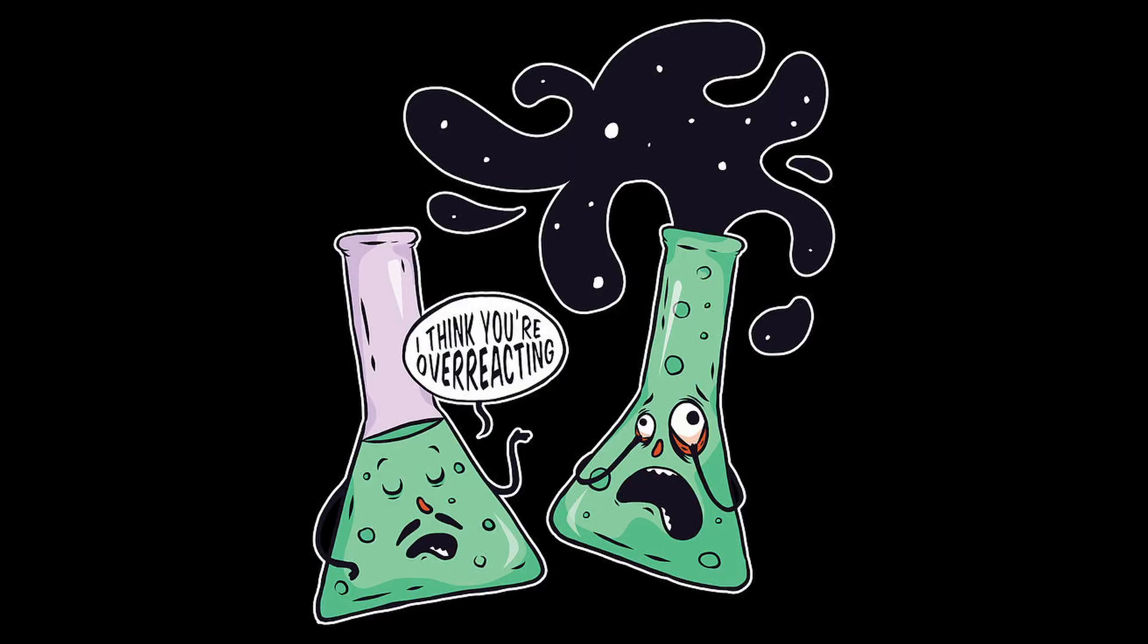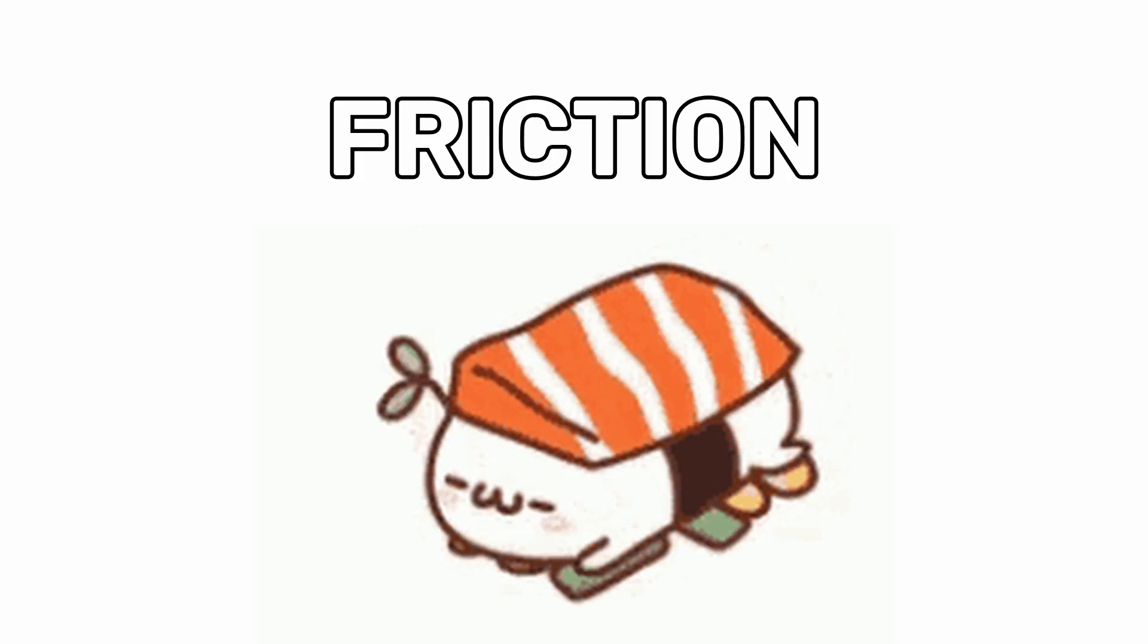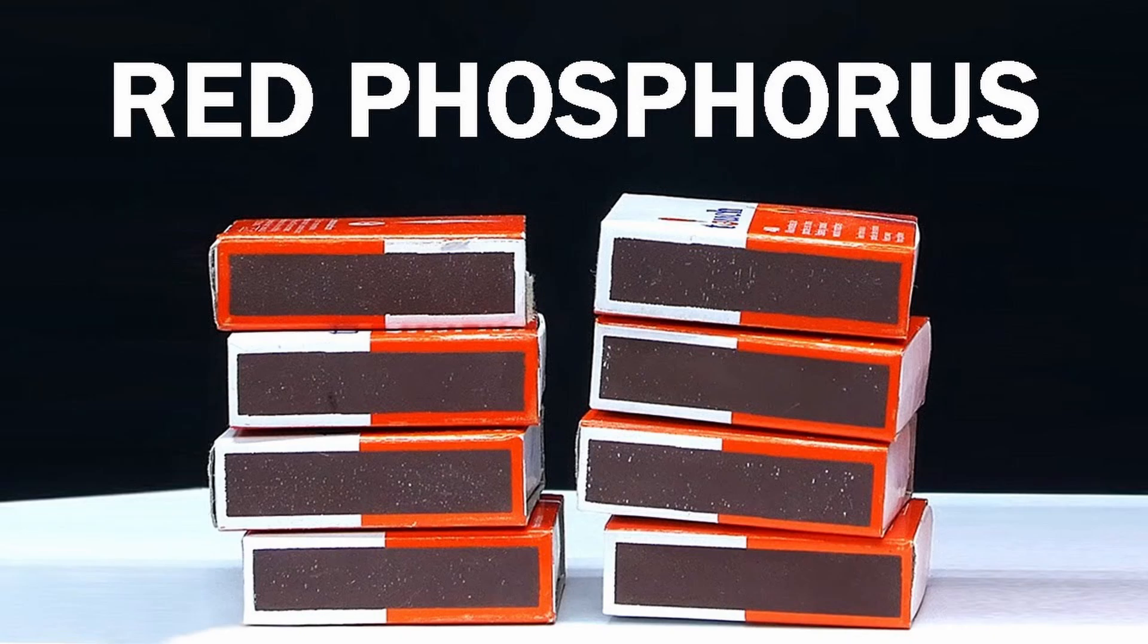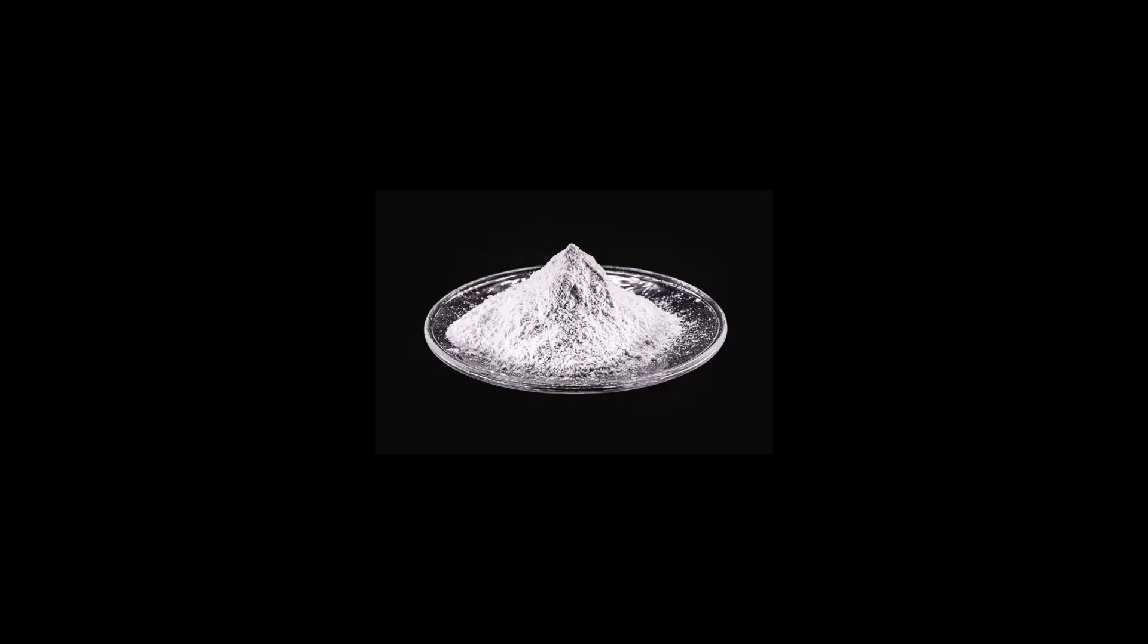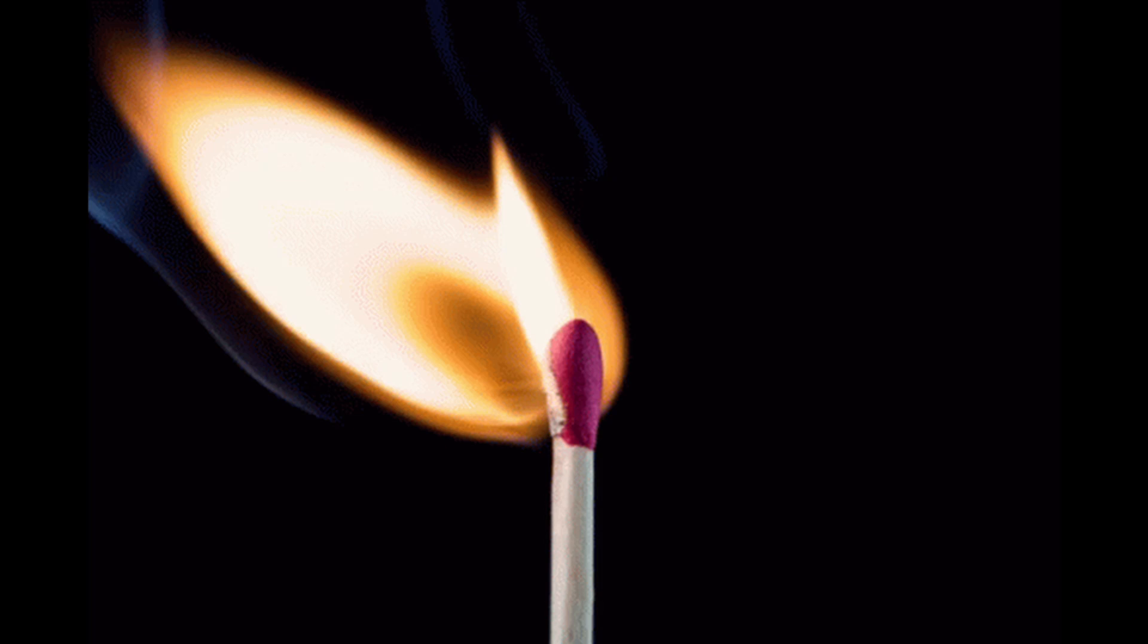Red phosphorus is much less reactive than white phosphorus and doesn't ignite spontaneously, but it can be ignited with friction, which is why it's often put on the side of match boxes. When a match is struck against the surface, a small amount of red phosphorus is converted to white phosphorus, which ignites in the air and lights the match head.